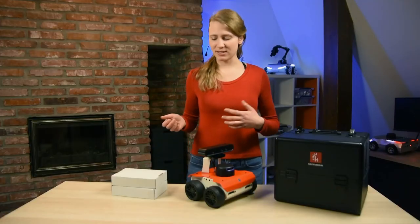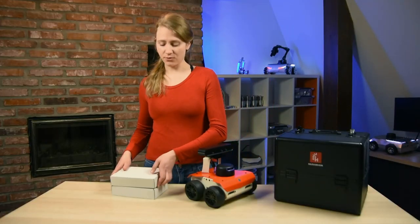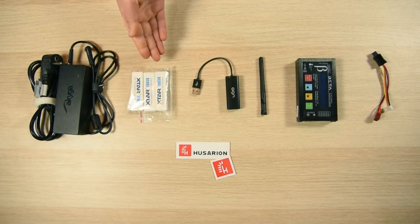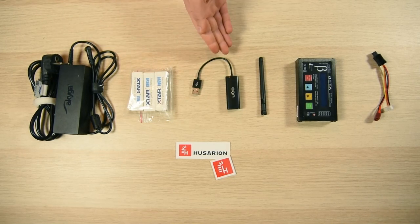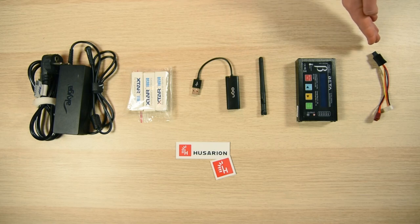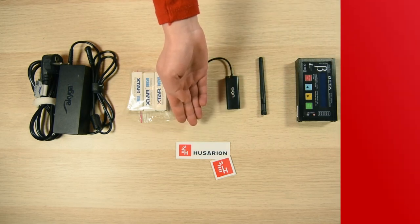Now let's get back to the boxes where we will find some useful accessories. So first we got a power adapter, lithium ion batteries, USB to Ethernet adapter, Wi-Fi antenna, universal charger together with a charging cable and some cool Hussarian stickers.